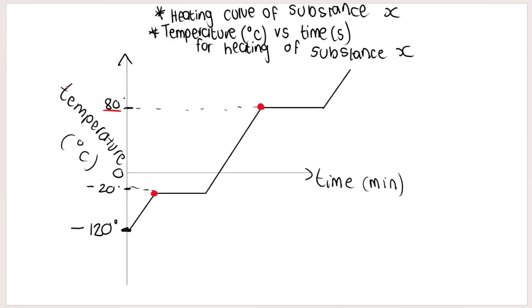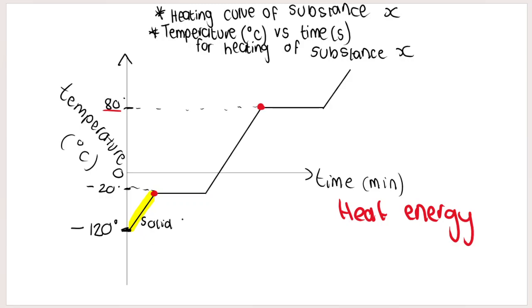Let's discuss what happens in this graph. We start off in the solid phase. The inclined parts of the graph represent when my substance is in one phase: solid here, liquid here, and gas here. As I add heat to the substance, it goes from solid to liquid and then liquid to gas.